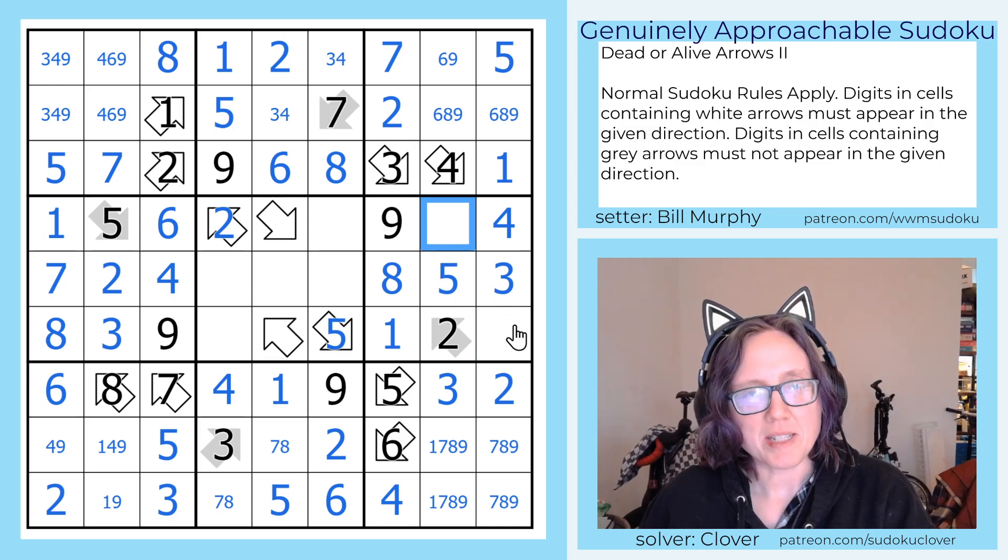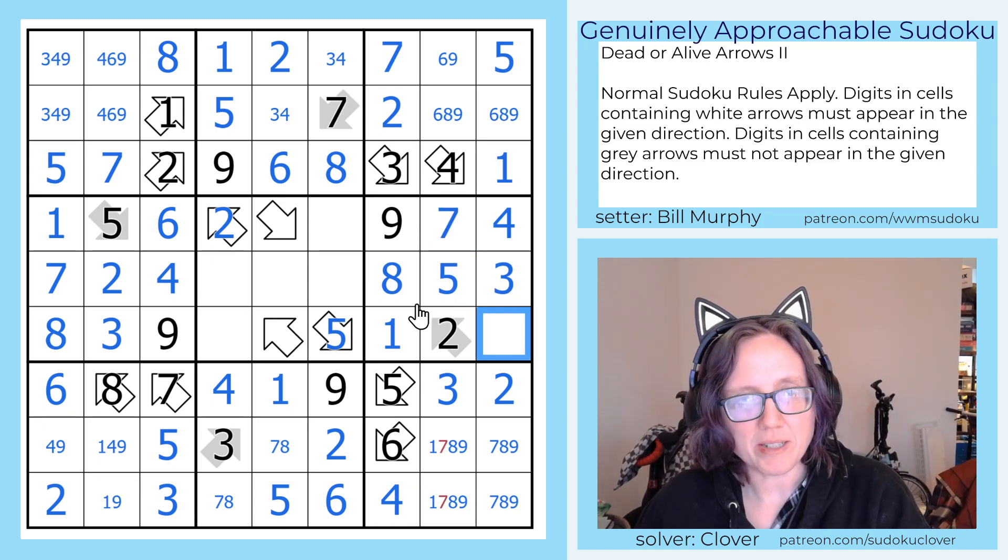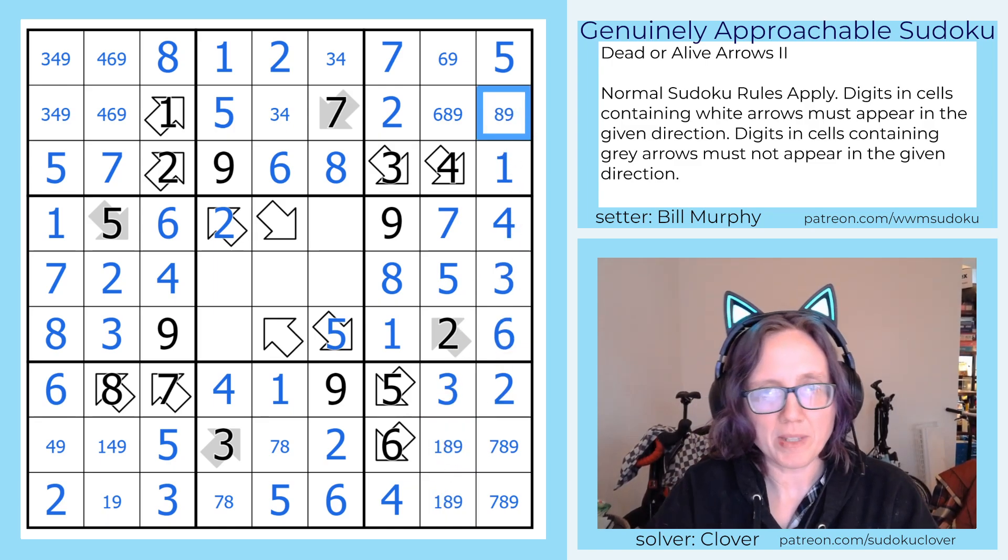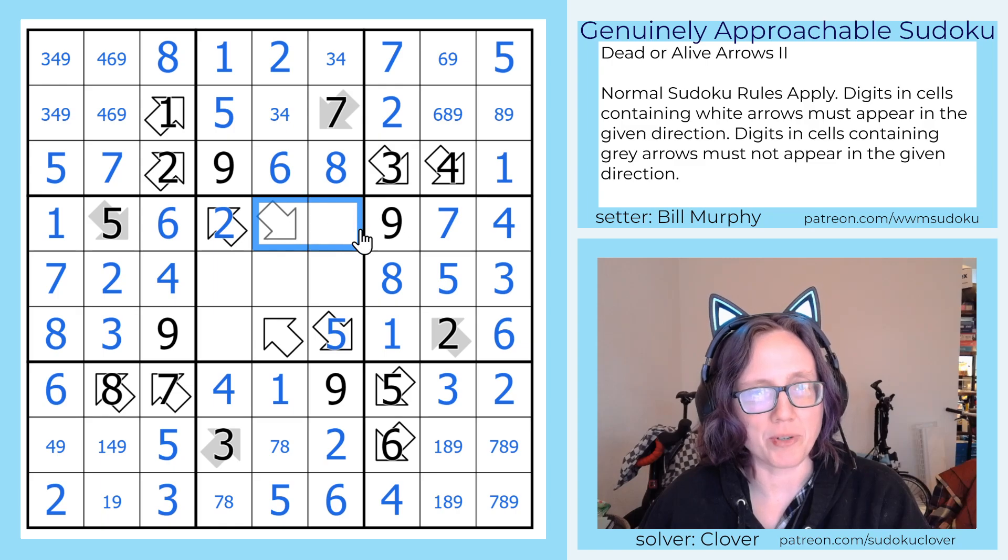These are going to be 6 and 7. There's a 7, there is a 6, and that should give us enough information that we can get a little bit more value out of these arrows in the middle at this point.